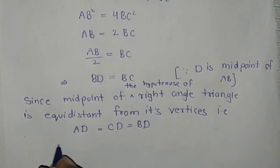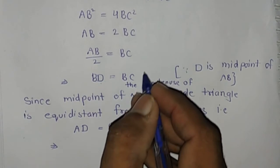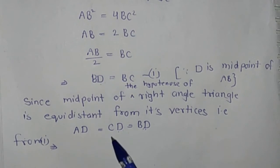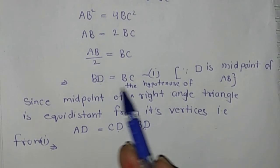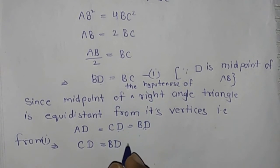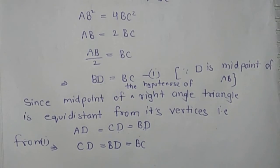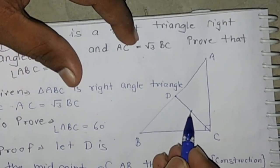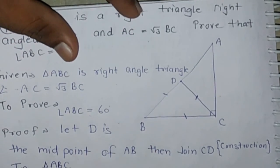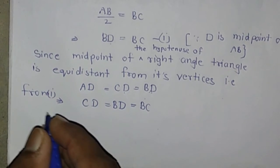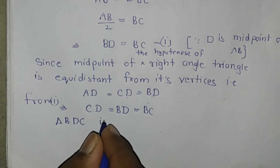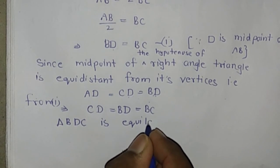From equation 1, we have BD equals CD and BD equals BC. Then CD equals BD equals BC. Therefore, triangle BDC is an equilateral triangle.